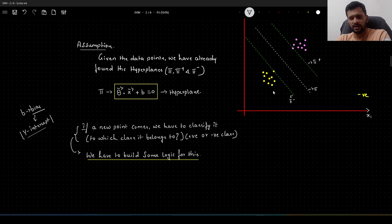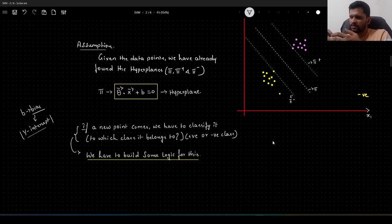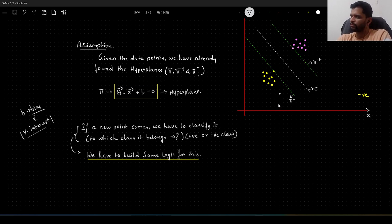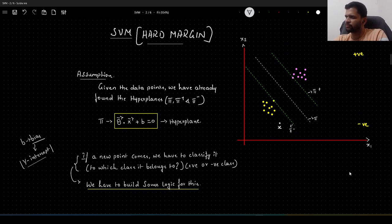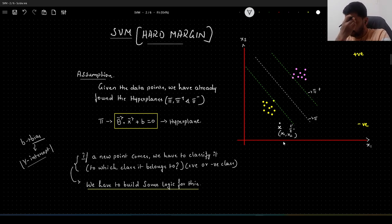Once we have identified this hyperplane with this particular equation, if a new point comes in — let us say we have a point somewhere here — we need to classify whether this point belongs to the negative class or positive class. By just looking at it, we can say it belongs to the negative class, but the machine needs a rule to do this. We denote this data point as capital X, with coordinate systems x1 and x2, so this X will have the points x1 and x2.